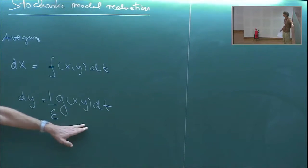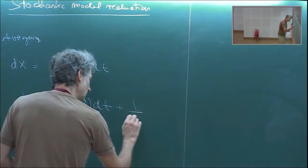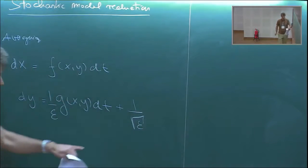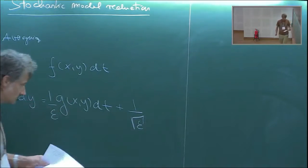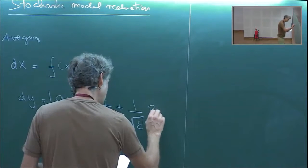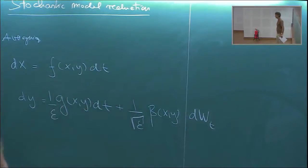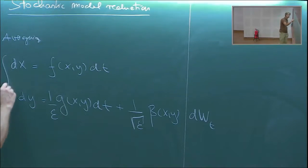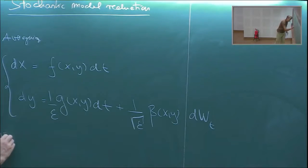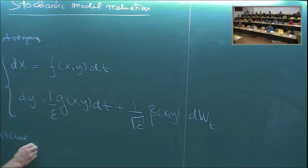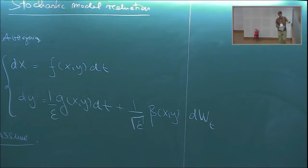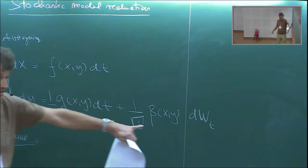Let's add — and you will see why I write this later — a (1/√ε) times a noise term β(x, y) dW_t, where W_t is a Wiener process. So now we're looking at systems of this form, and we assume, as we did in the deterministic case, that the fast dynamics generates an invariant measure. But since this is stochastic, think of it as an Ornstein-Uhlenbeck process — so now we actually have a real density with respect to Lebesgue measure.